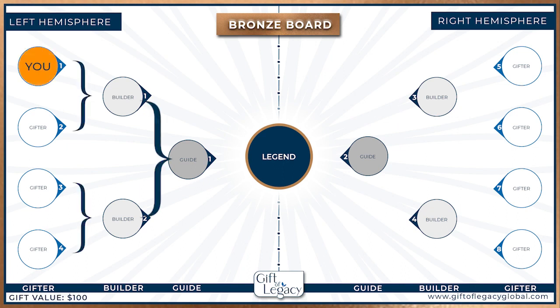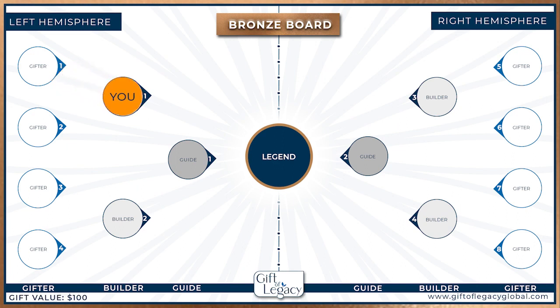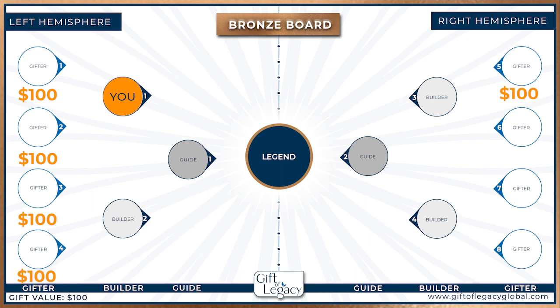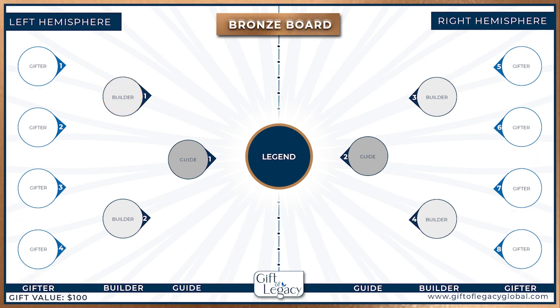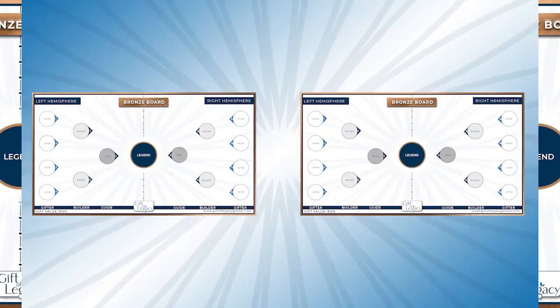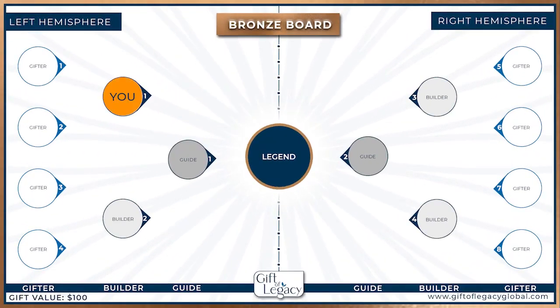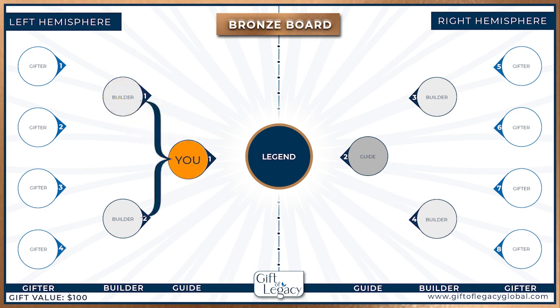The Builders become Guides and the four Gifters become Builders on the new board. You are now in the Builder position. The purpose of the Builder is to invite two new Gifters to the board. When all four Builders have invited the eight new Gifters, they give their unconditional $100 to the Legend of the board, and again the two hemispheres split and start two new boards. The Guides have now become Legends of their own boards, and the Builders — including you — are now Guides.